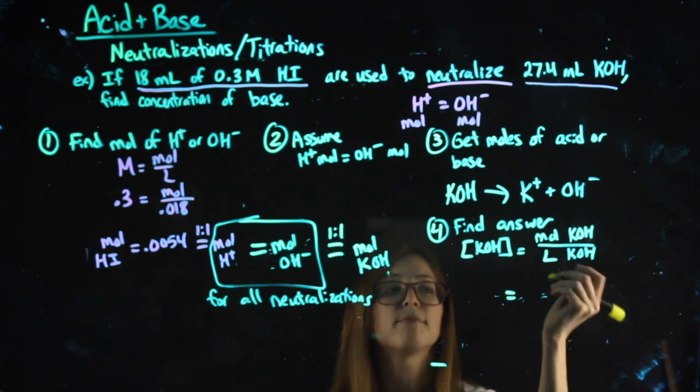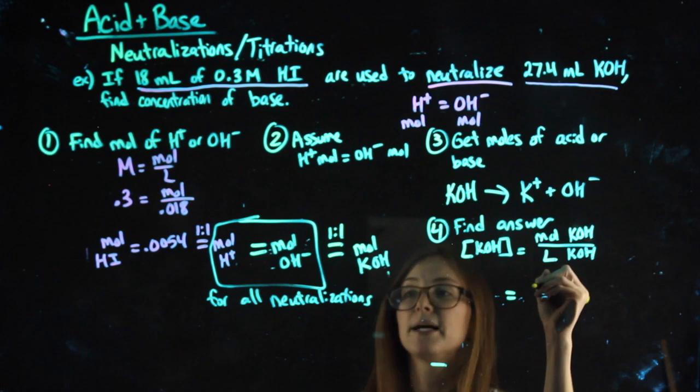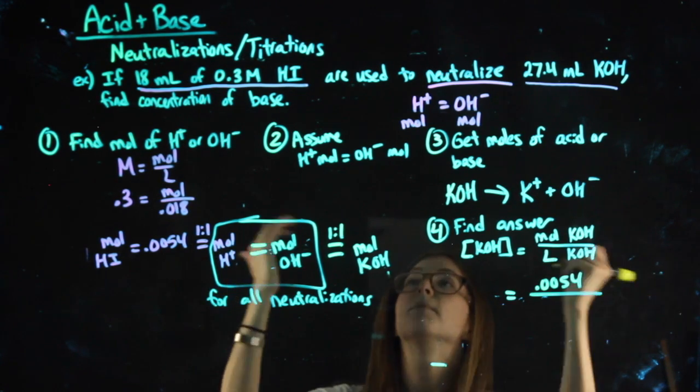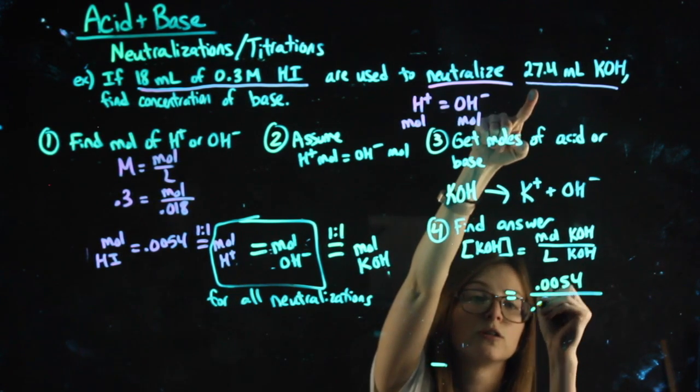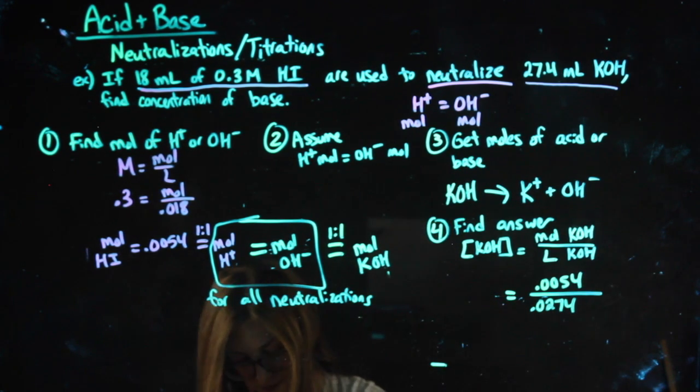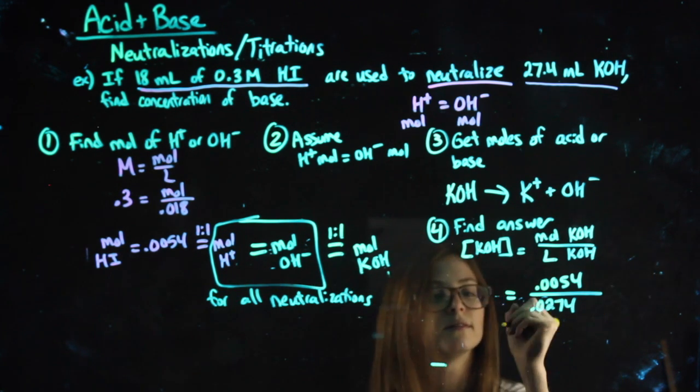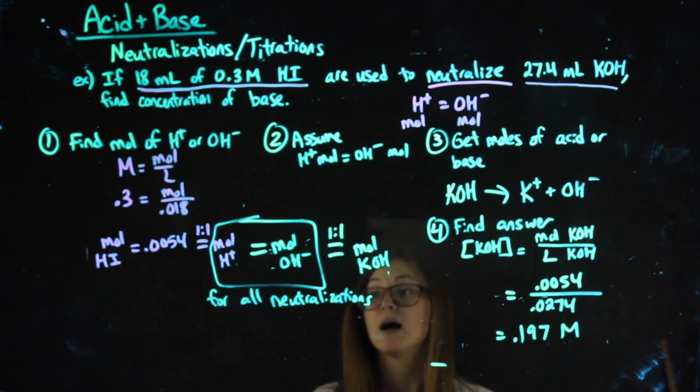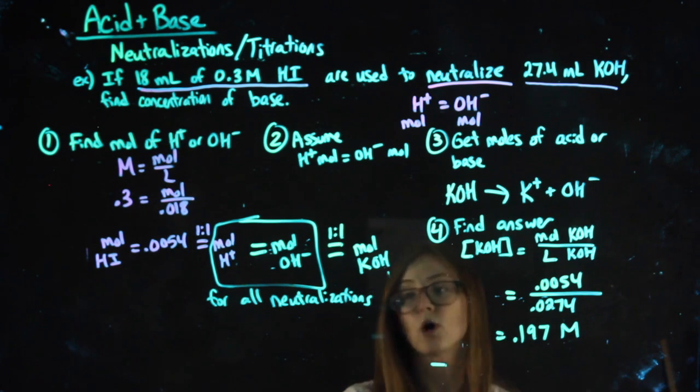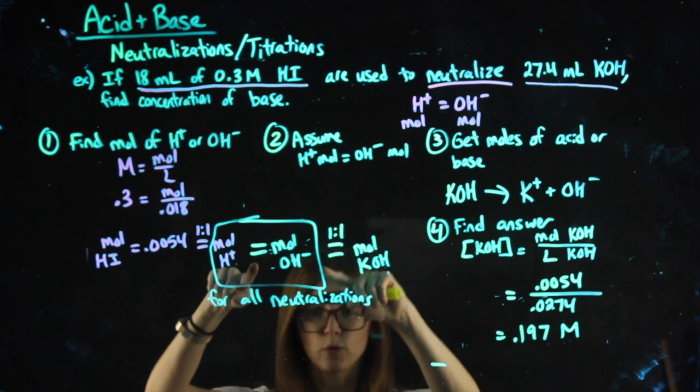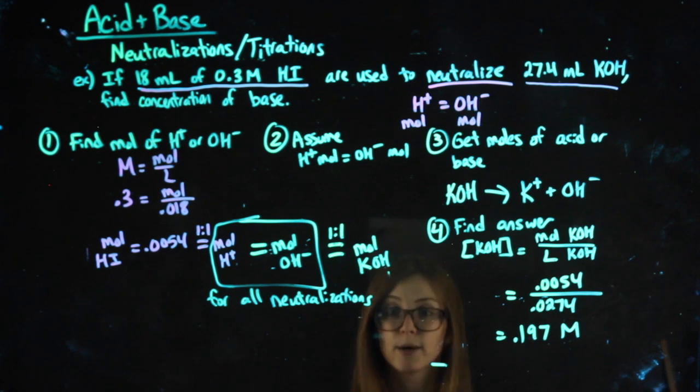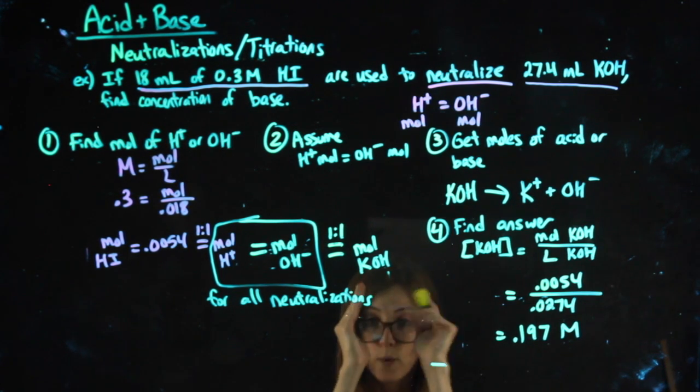But I can find the molarity of my KOH, which is the concentration, by taking my moles of KOH over my volume, my liters of just the KOH. We get 0.197 molar for molarity. So there's not that much actual work to show. I would like you to show everything that's equivalent. Some of the times, it won't be a one-to-one ratio with the base. Let's say we used strontium hydroxide or barium hydroxide that has OH2.